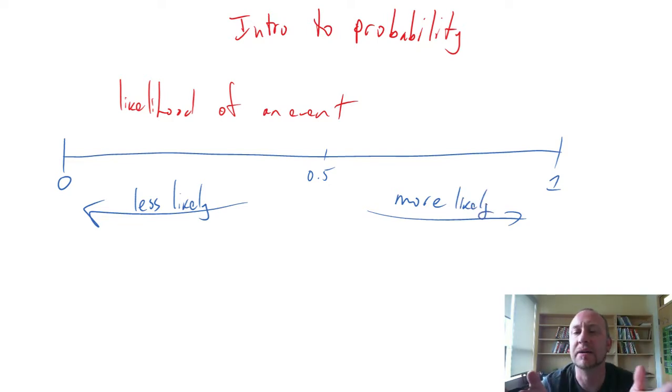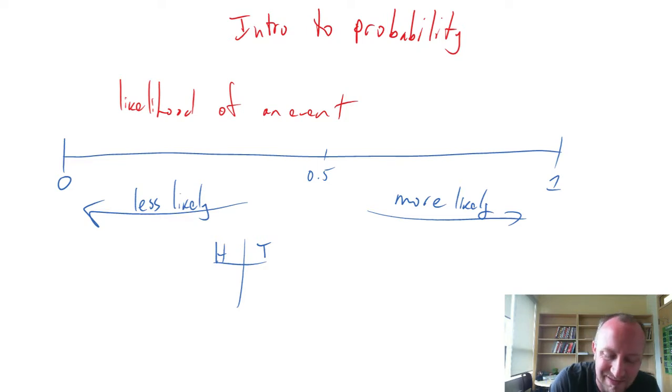For example, we can take something as mundane as flipping a coin. Everybody who teaches statistics and probability goes to flipping the coin first. Flipping a coin, you can either get heads or tails. Assuming the coin is what we call a fair coin with both sides properly weighted and constructed, we say there's a 50-50 chance of getting heads or tails.